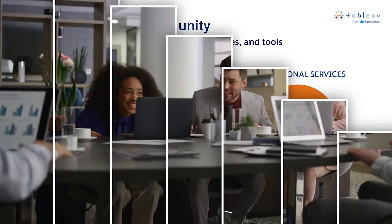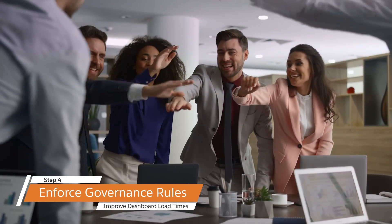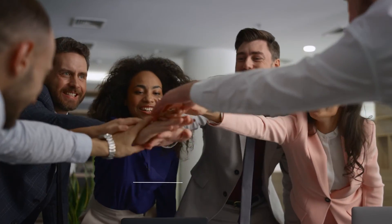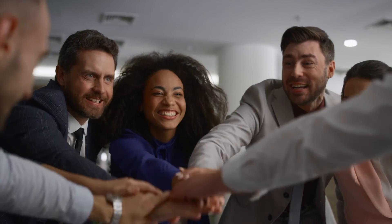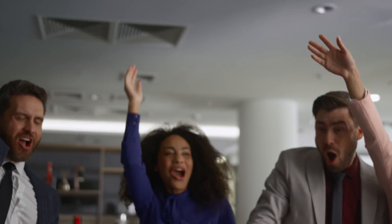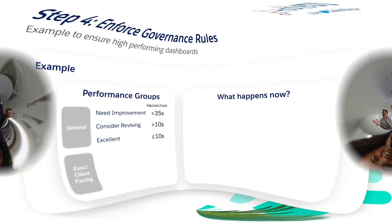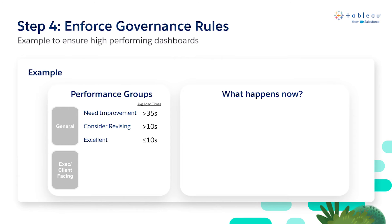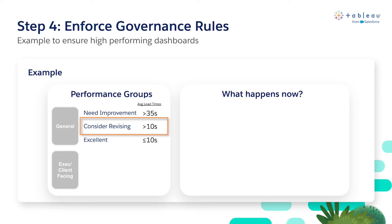Once you've improved dashboard load times for your organization, you'll want to keep it that way. Complete the fourth and final step of the framework by setting governance rules and follow-up actions that ensure continued high performance. Start by bucketing your dashboards into meaningful performance groups based on average load times. In our example, we group dashboards with an average load of over 35 seconds as Needs Improvement, over 10 seconds as Consider Revising, and under 10 seconds as Excellent.